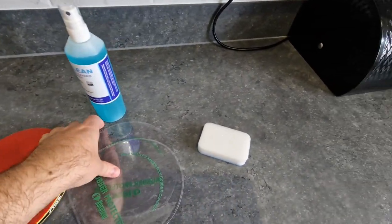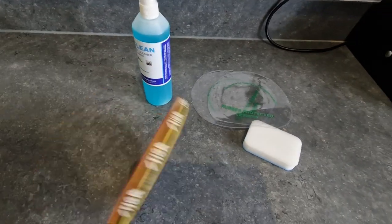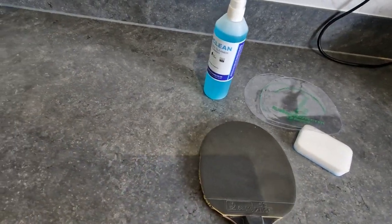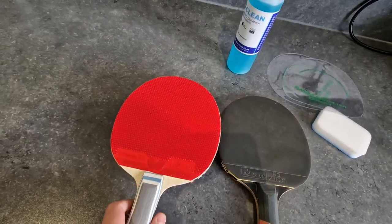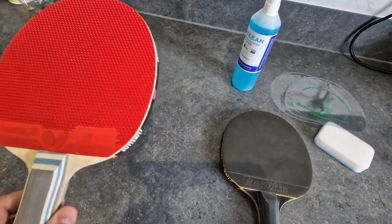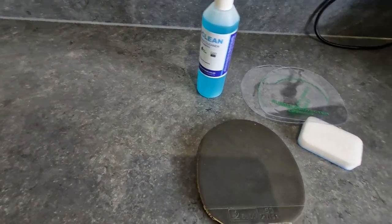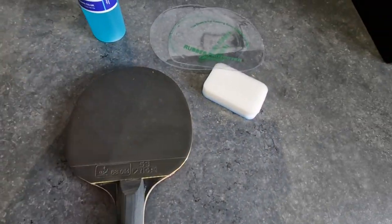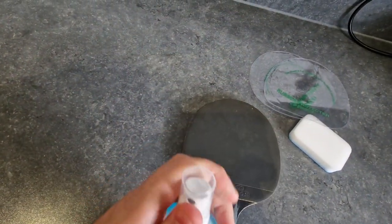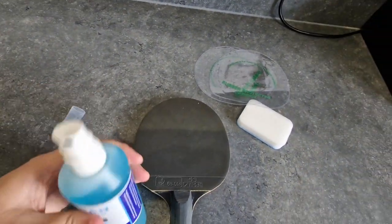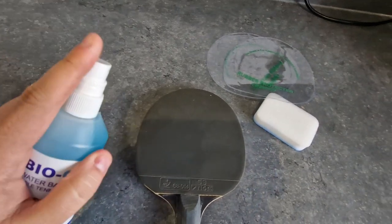So first things first we're going to clean the actual bat. I've had this bat for years. I wanted to do it on my new bat but I've just ordered this bat so it doesn't actually need cleaning right now. So we're going to take the lid off and it just needs one squirt.